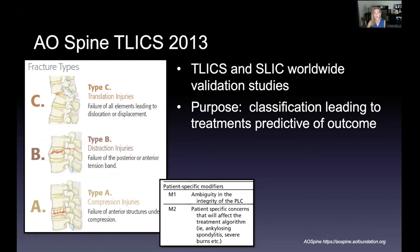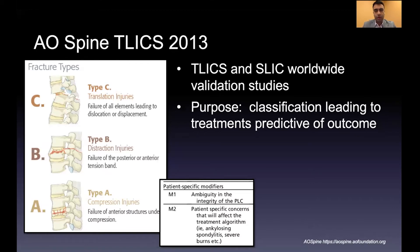You only need to do this classification at the initial scan — it's a triage tool for immediate management decisions. For TLICS and AO Spine, you do it at the time of arrival. The ASIA scale is different — although we do it at time of injury, the most accurate ASIA grading is done 48 to 72 hours after injury.